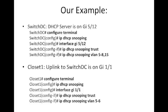If we take a look at the scenario we just described, here are the things we do on those switches. We first get into Switch DC — the one that has our DHCP server — go into config terminal mode, and turn it on globally by saying 'IP DHCP Snooping'. Then we go into the interface the server is on, which is GigE 512, and say 'IP DHCP Snooping Trust'. The last thing is to specify which VLANs we want DHCP Snooping on, using 'IP DHCP Snooping VLAN 5-8,15'.